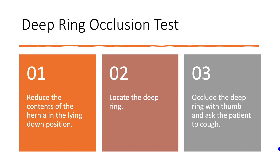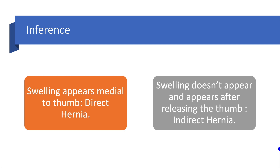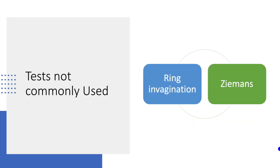The deep ring occlusion test: first, ask the patient to reduce the contents of the hernia in the lying down position. Locate the deep ring — as explained earlier in this video. Occlude the deep ring with the thumb and ask the patient to cough. If the swelling appears medial to the thumb, it is a direct hernia. If the swelling does not appear and only appears after releasing the thumb and coughing, it is an indirect hernia. The ring invagination test and the Zieman's test are not commonly used.